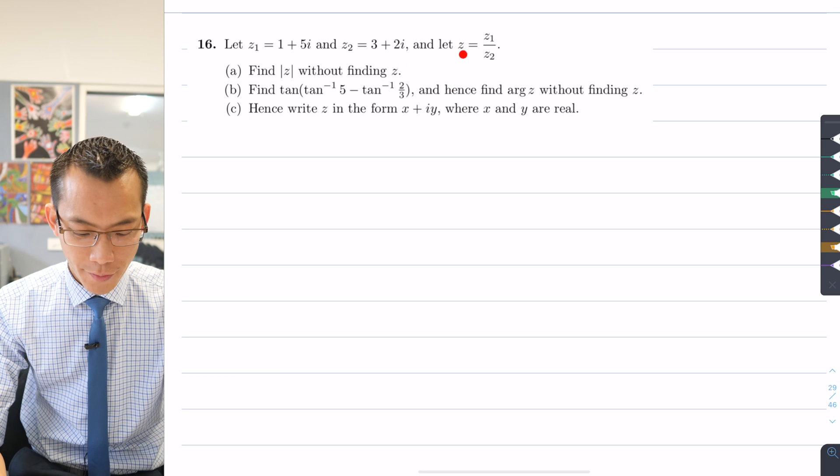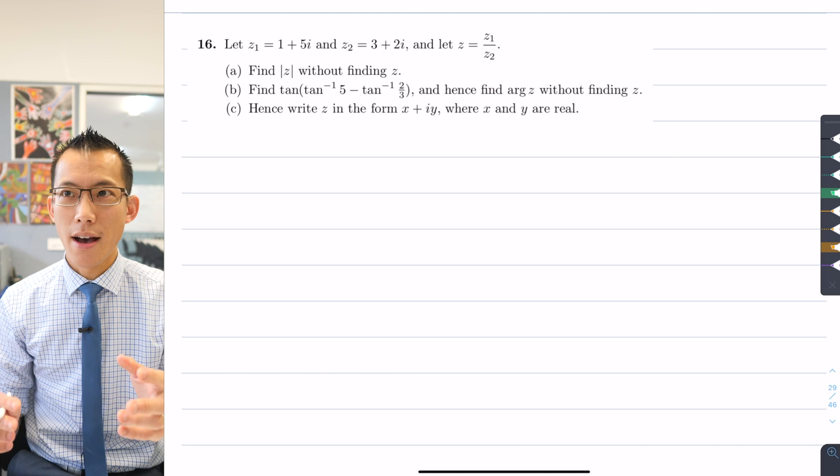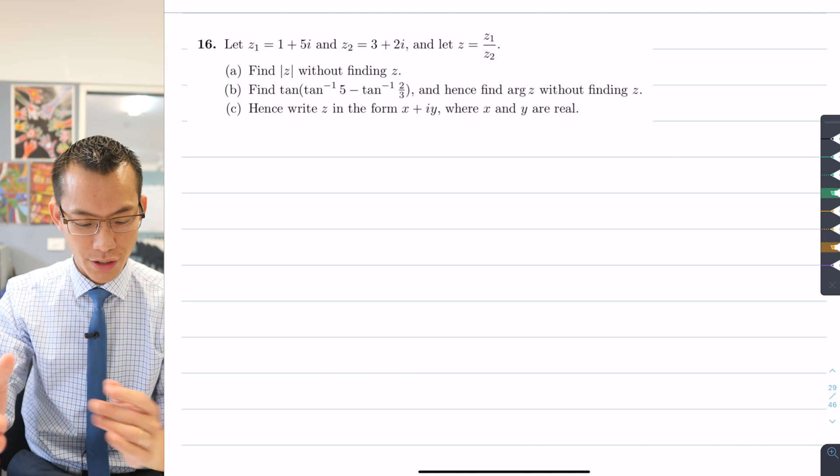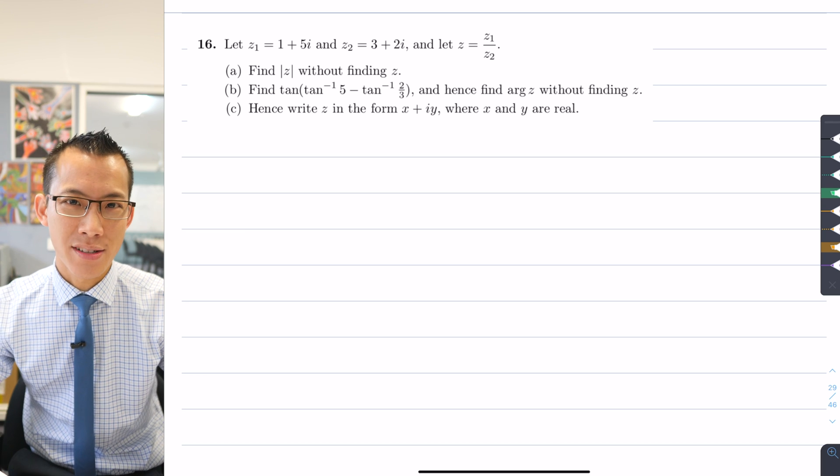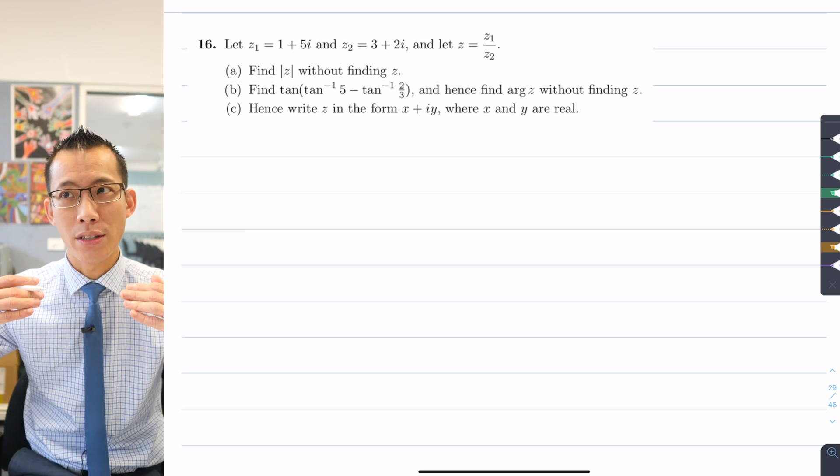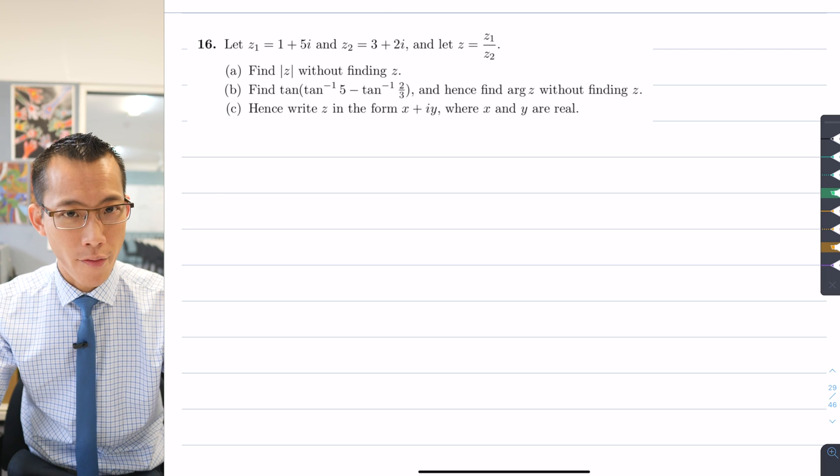And then there's a series of questions that follow from this. Parts a, b, and c, as is often the case, are really all leading in one direction. So part c is kind of the real question, and parts a and b are what we teachers like to call scaffolds. They're stepping stones all the way towards c, which is the final result.